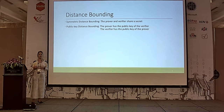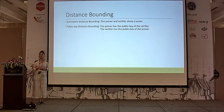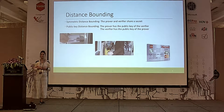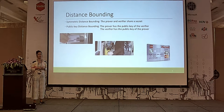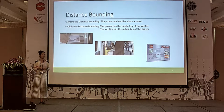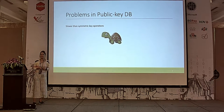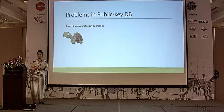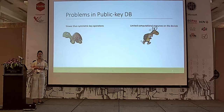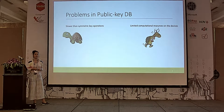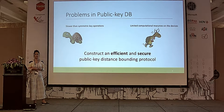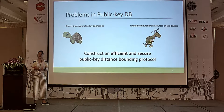In the symmetric case, the verifier and the prover share a secret. In the public key case, they know each other's public key. In most applications, it is more feasible to use public key distance bounding because we cannot always assume that the two parties share a secret. However, public key cryptography is slower than symmetric key operations, and the devices used for distance bounding have limited resources. Therefore, it is very important to construct efficient public key distance bounding with fewer public key operations while preserving security.